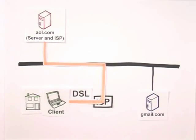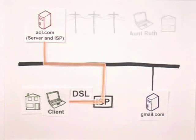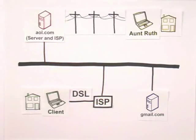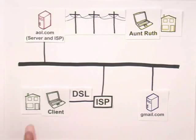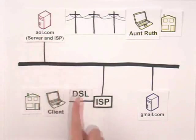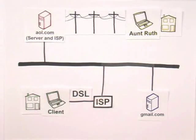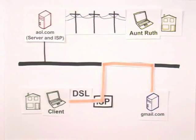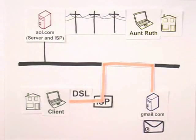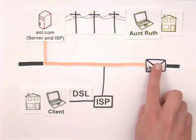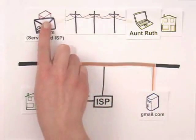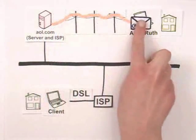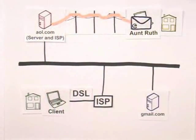My computer connects with AOL.com, and I can look at its web pages. Now let's say that I want to send an email to Aunt Ruth. Aunt Ruth has AOL dial-up from home, and I've got a Gmail account. I log onto gmail.com and compose a message to Aunt Ruth's email address, auntruth at AOL.com. Once I click send, gmail.com sends the email to AOL.com. The next day, Aunt Ruth dials into AOL servers and retrieves the email.